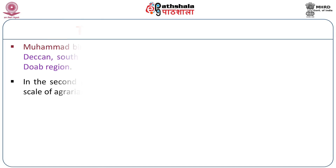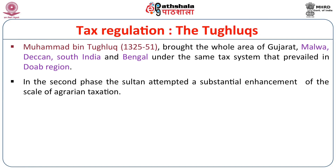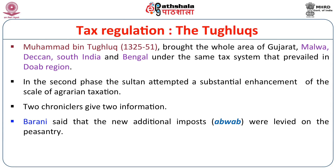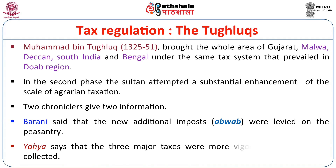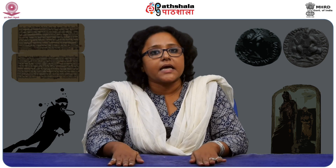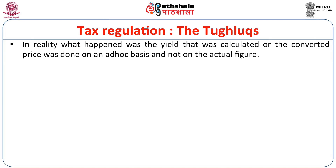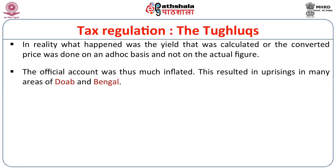Muhammad bin Tughluq brought the whole area of Gujarat, Malwa, Deccan, South India and Bengal under the same tax system prevailing in the Doab region — a revolutionary change that introduced a uniform tax system across a large part of the subcontinent. In the second phase, the Sultan attempted a substantial enhancement of agrarian taxation, which was a big blunder. Barani said that new additional imposts — the abwab — were levied on peasants, while another source states that the three major taxes were more vigorously assessed and collected. In reality, the yield converted to price was done on an ad hoc basis, not on actual figures, and the official account was thus much inflated.